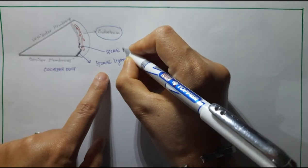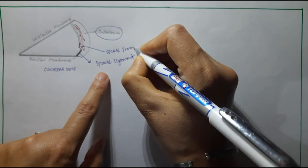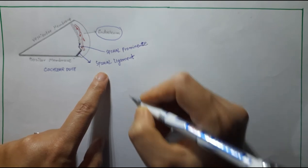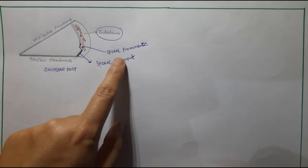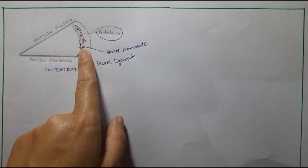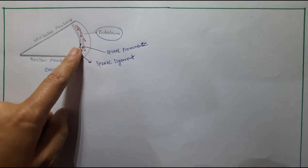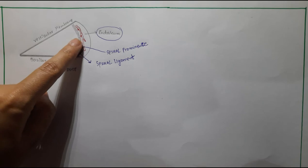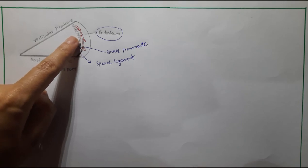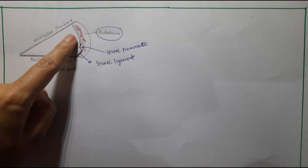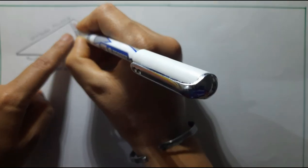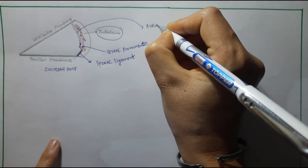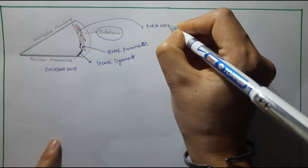Between the spiral prominence and the vestibular membrane, the thickened endosteum is lined by a specialized epithelium which is called stria vascularis.